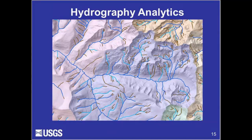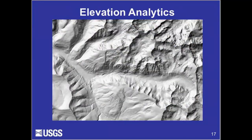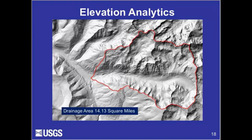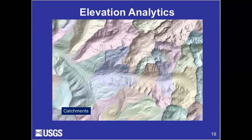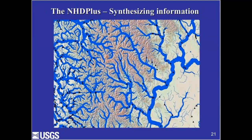Importantly, these data are designed to allow us to perform analytics, thereby increasing the power of the data beyond mapping, giving us answers to many questions about the landscape. An example is the ability to navigate the nation's waterways and instantly measure the length of networks. We can look at elevation data to instantly determine the area of a basin and generate drainage catchments. These capabilities have led to powerful interactive analytical systems like StreamStats, which can estimate water flows of rivers and streams. The NHDPlus uses these data, along with other landscape characteristics, to estimate flow on a massive scale across the nation.